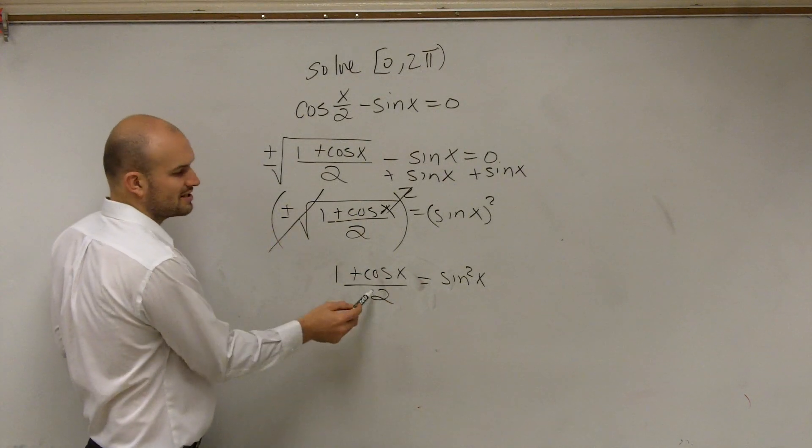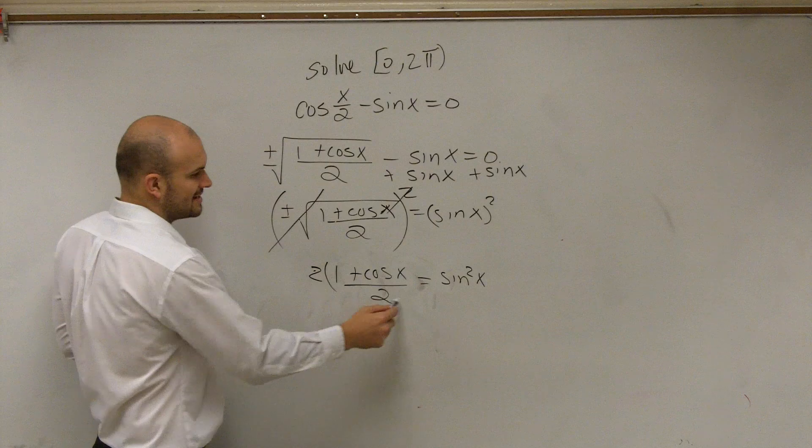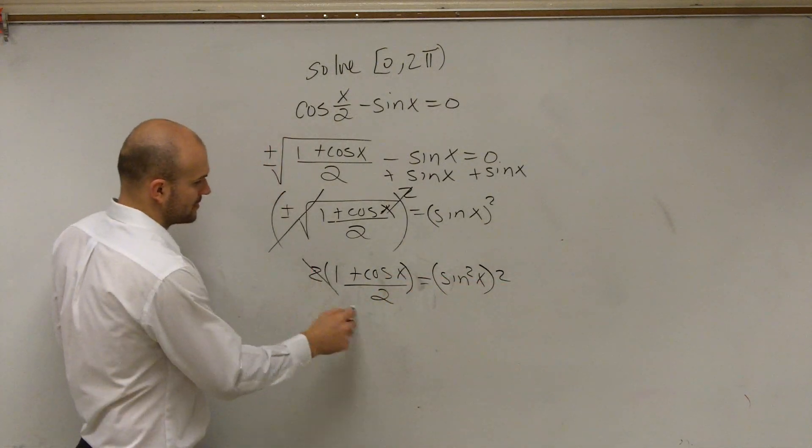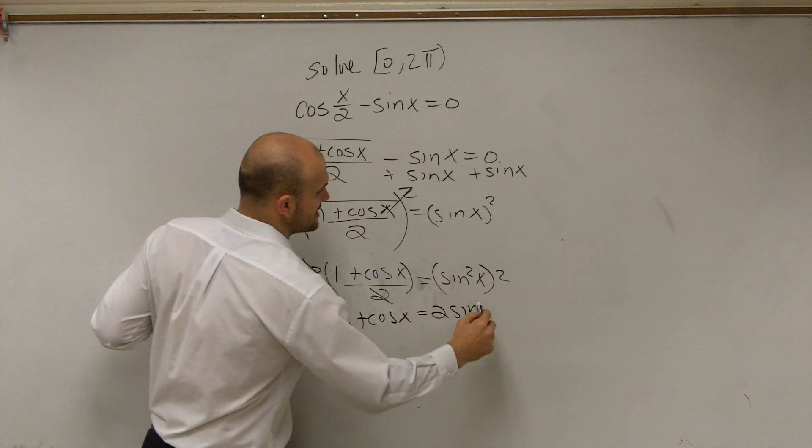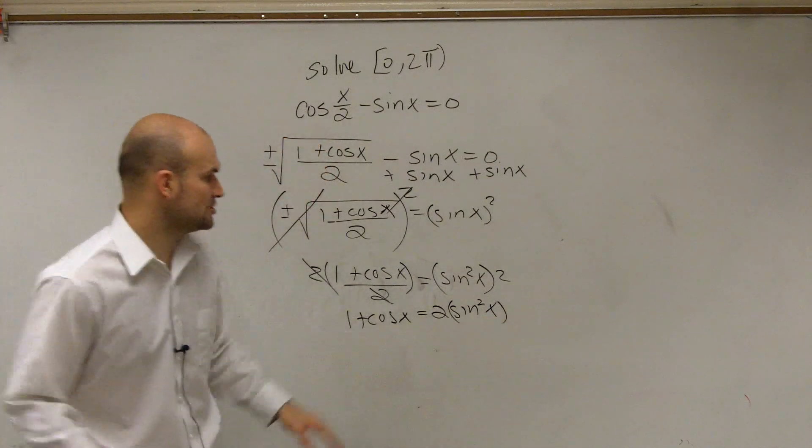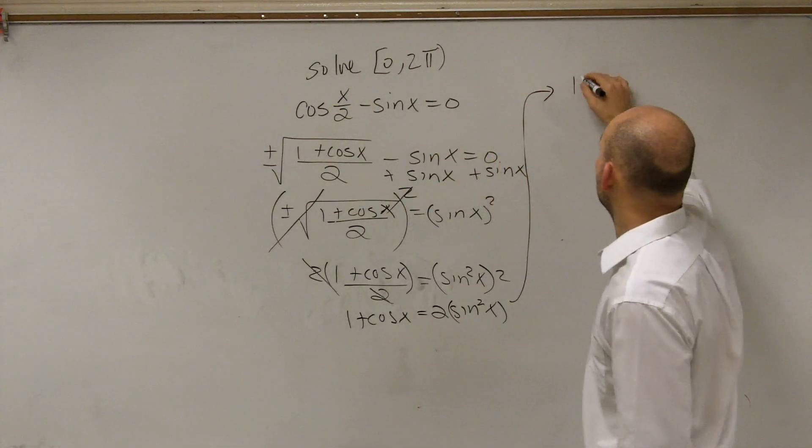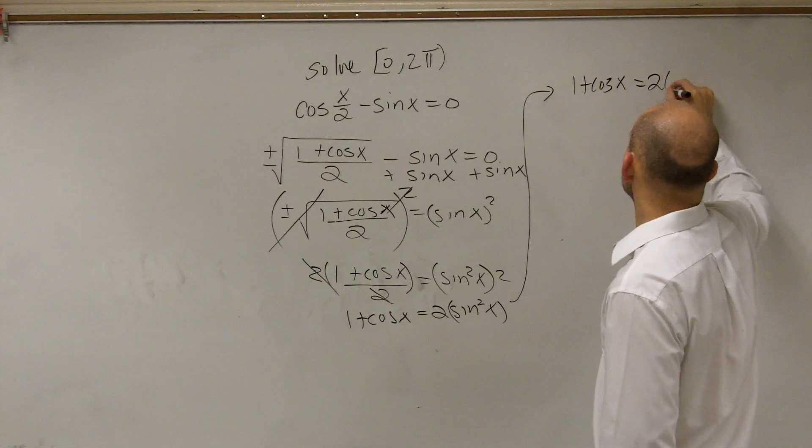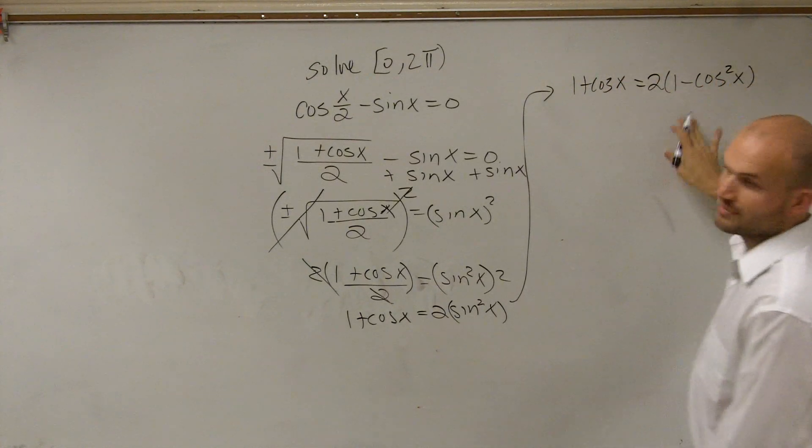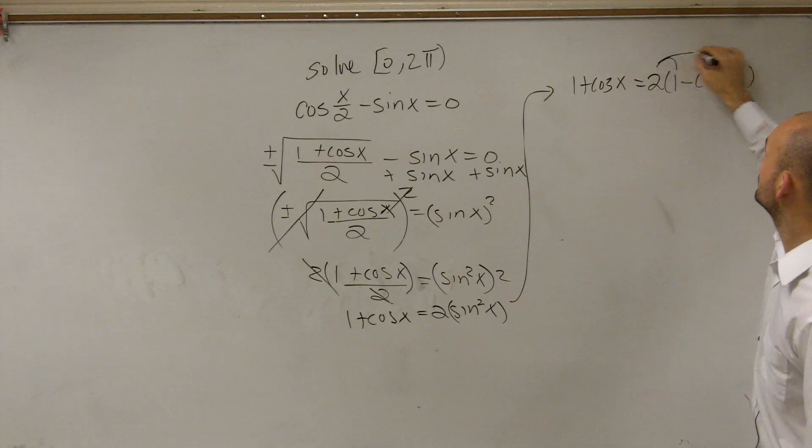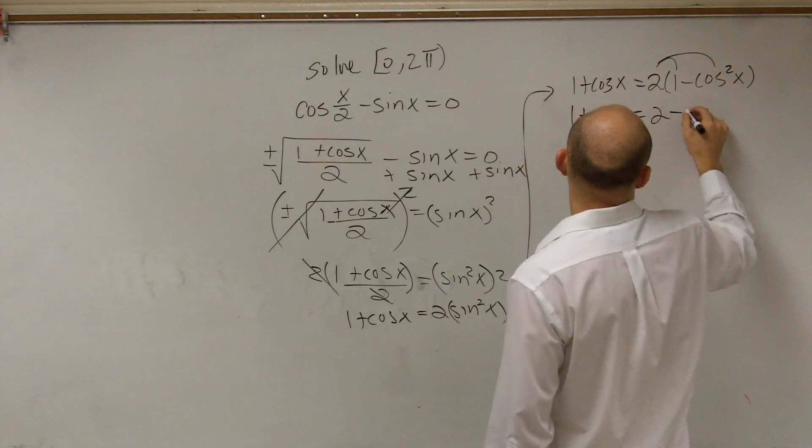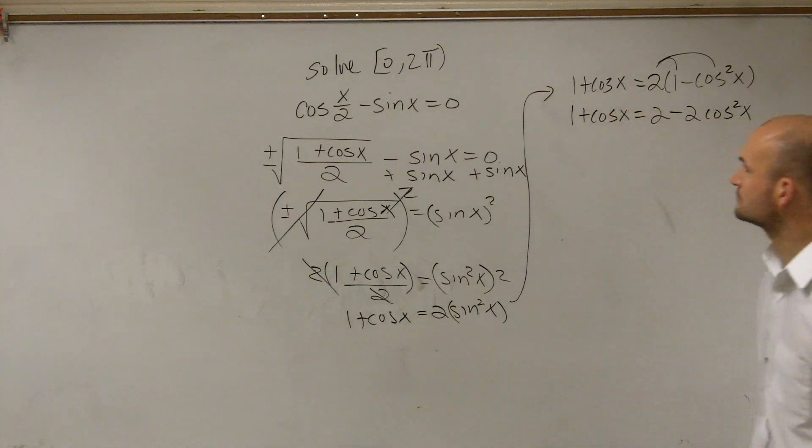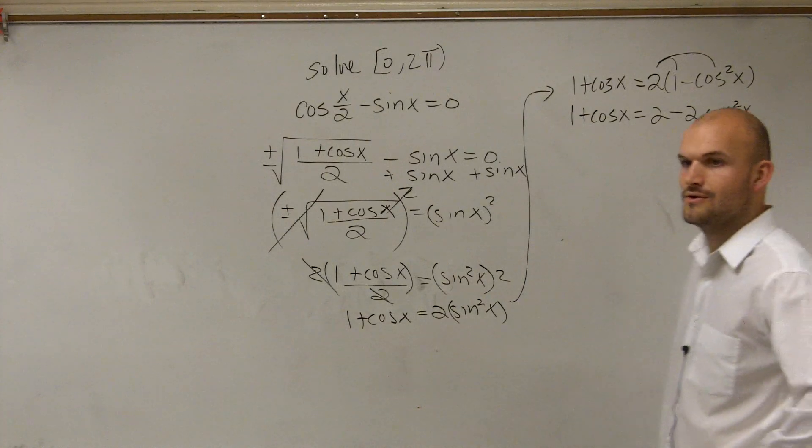And then, what I can do actually is first, let's get the 2 off the bottom. Let's not deal with fractions. So I'm going to multiply both sides by 2. Those divide to 1. So I'm left with 1 + cos(x) equals 2sin²(x). Everybody following me so far?